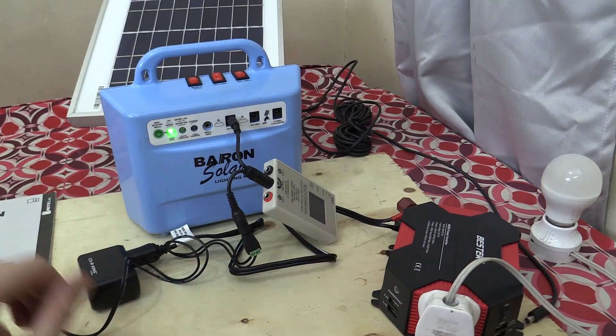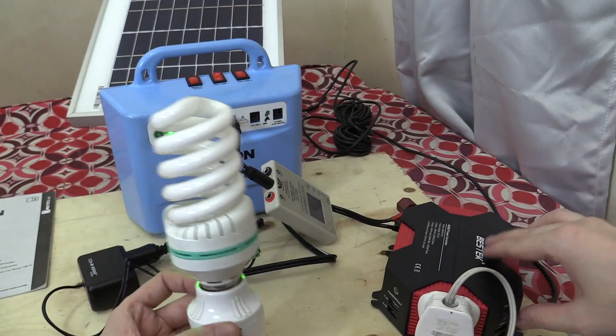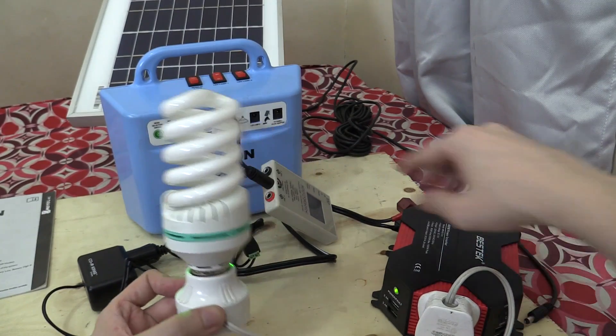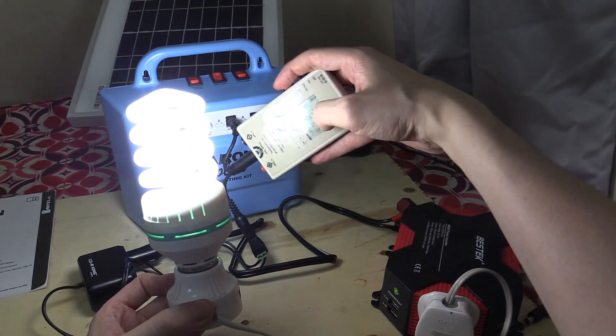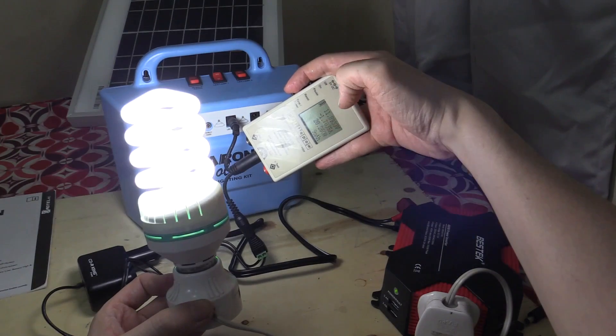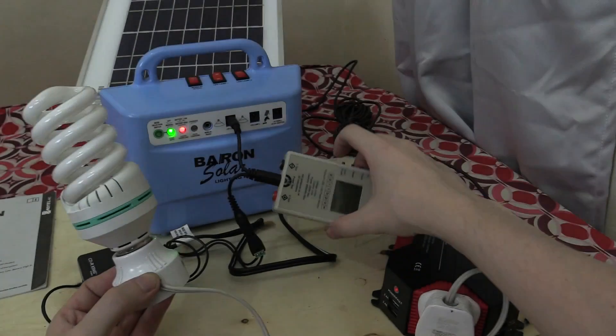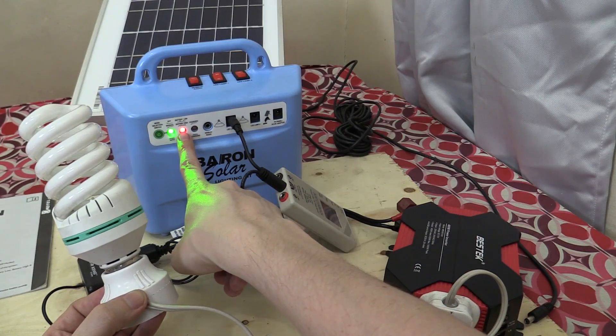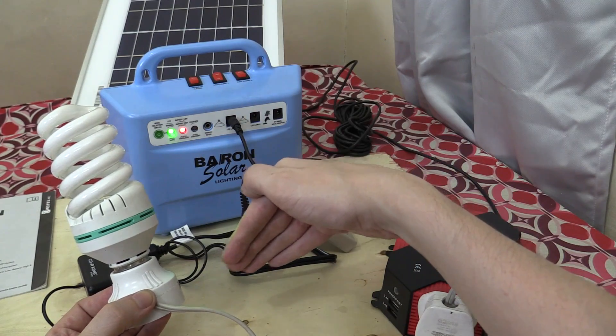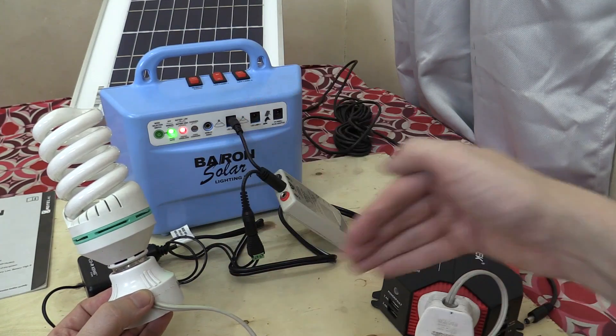and we can actually test that out. This is a 26-watt CFL bulb, and that's drawing, well, I've got it on my meter here at around 20 watts. But you see there, the red light came on, and it's disconnected the load because it's overcurrent. It's drawing too much current.